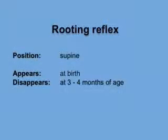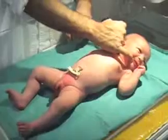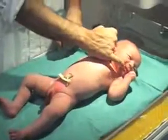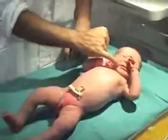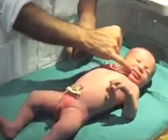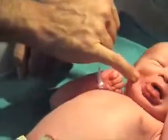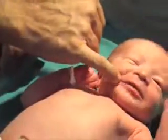Rooting Reflex. Appears at birth and disappears at 3–4 months of age. With the baby's head positioned in the midline and hands held against the anterior chest, stroke with your finger the perioral skin at the corners of the baby's mouth and the midline of the upper and lower lip.